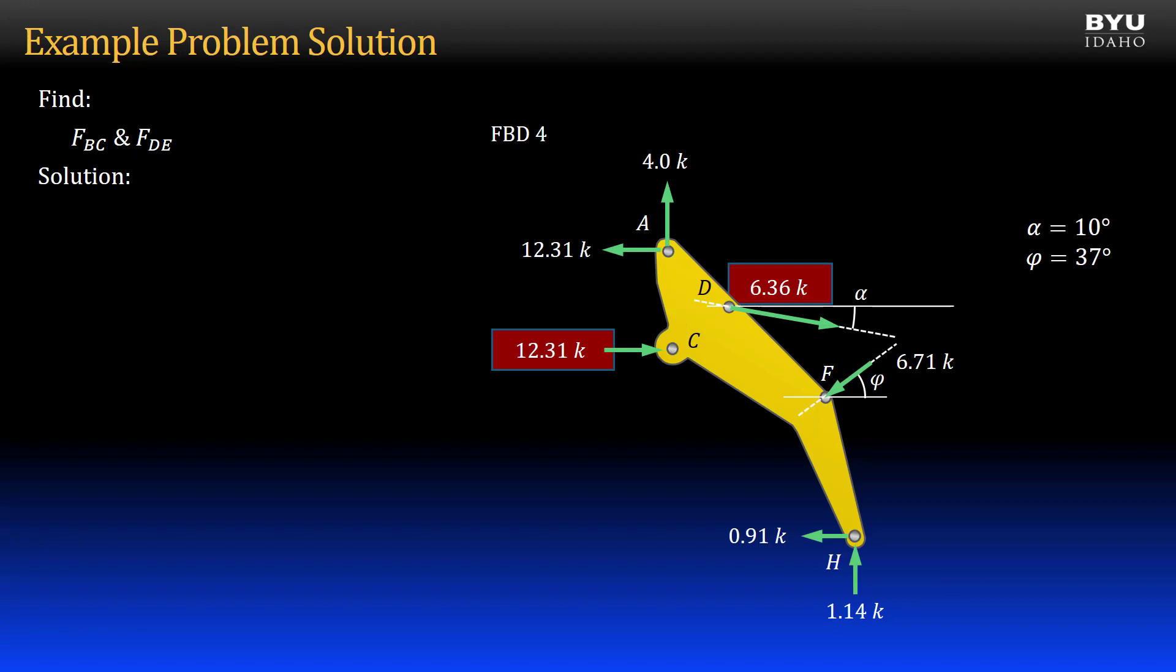We now have the forces in both RAMs and the problem is complete. Note that along the way, we found all of the forces acting on the arm member. We did not need a free body diagram of this member to solve the problem.